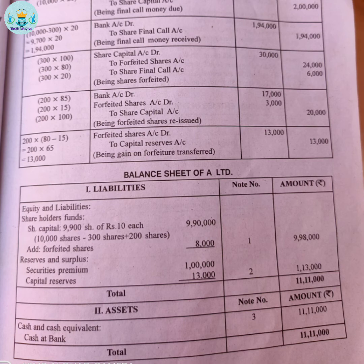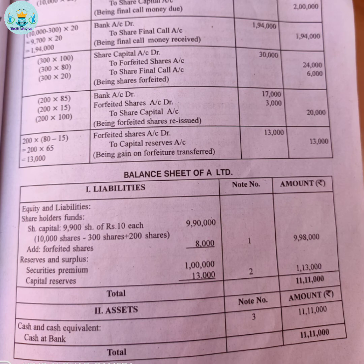For the balance sheet: equities and liabilities. First, note number and amount. Equities and liabilities - first liabilities, then assets. Shareholder's fund: share capital - 9,900 shares of Rs.100 each. Why 9,900 shares? Because 300 shares were forfeited and 200 were reissued; net issued is 9,900 shares. Exactly the amount goes in the balance sheet.